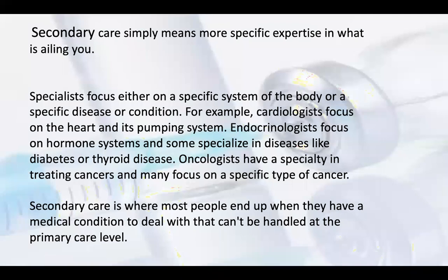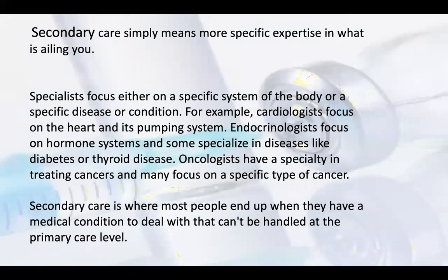Secondary care hospitals have more specific experts — specialists. There are so many types of specialists now; earlier there was only medicine and surgery, but now each has many sub-specialties. Initially, a general physician examines the patient and gives symptomatic treatment, but if not cured, the patient is referred to a secondary care hospital. For a cardiac problem, a cardiologist examines; for an endocrinology or diabetic problem, an endocrinologist; for cancer, the patient is referred to an oncologist, who then dispenses the appropriate medication.